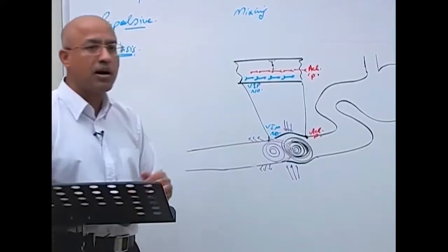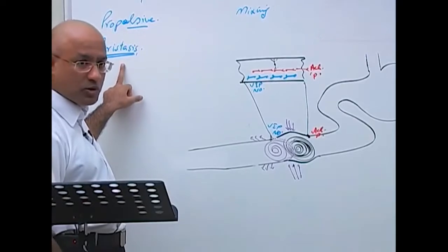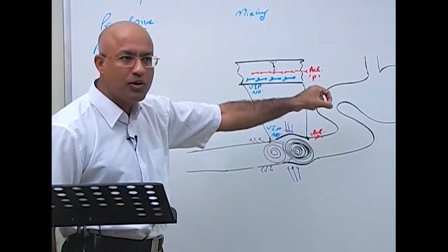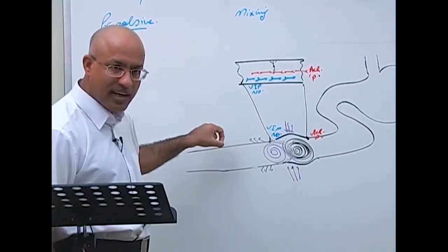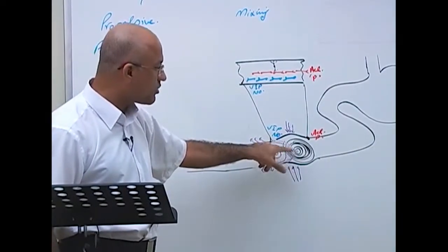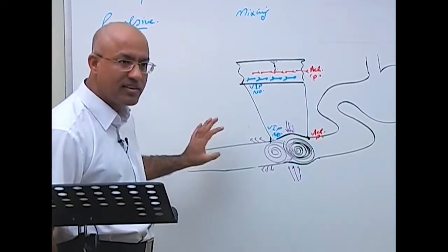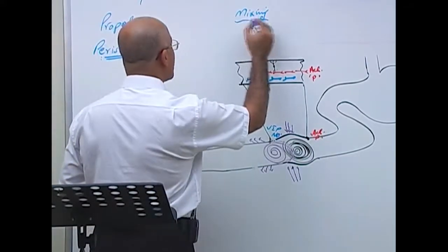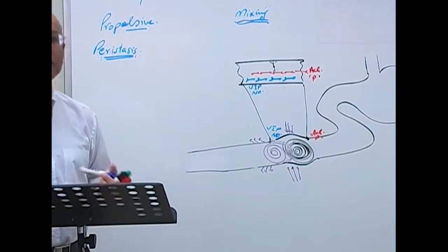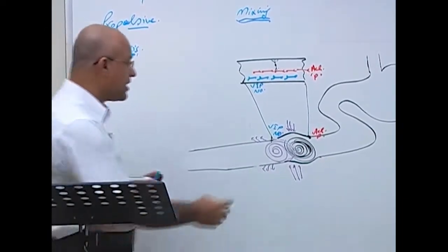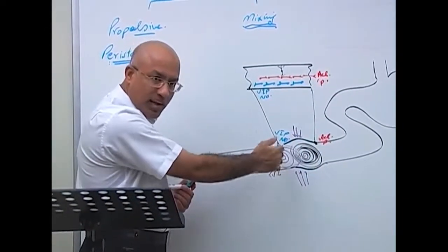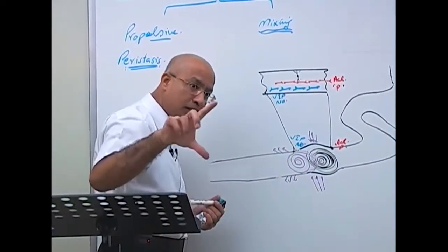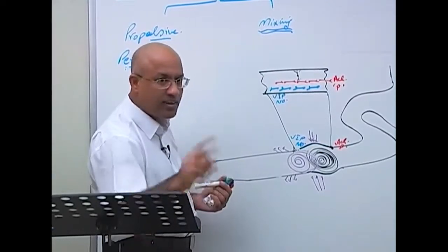So that is something about propulsive movement — how a constriction ring is produced and moves from the oral side to the aboral side, pushing luminal content toward the anal side. There are also mixing movements. It is worth noting that propulsive movement can do some degree of mixing as well — especially in the stomach, where weak propulsive movements accomplish mixing, which will be explained later.